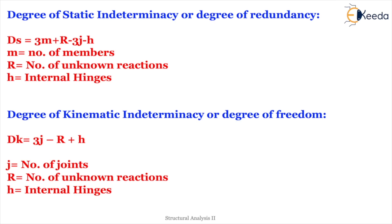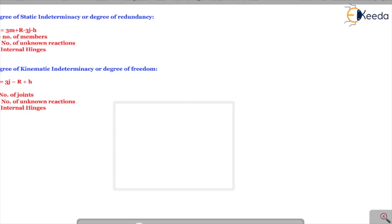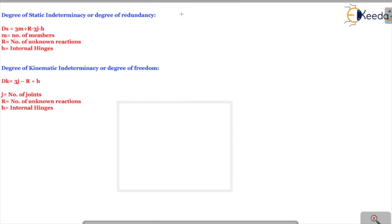The degree of kinematic indeterminacy, or degree of freedom, uses the same formula as for beams: DK equals 3j minus r plus h, where j is number of joints, r is number of unknown reactions, and h is number of internal hinges. These are the two formulas we need. Let's consider two frames.